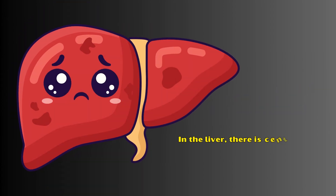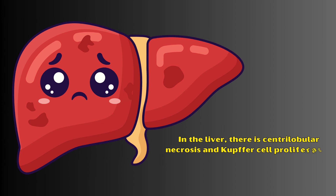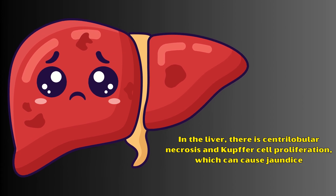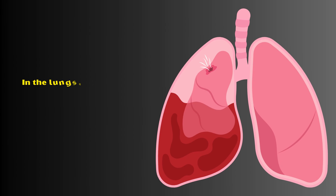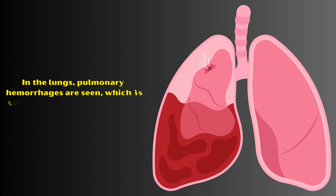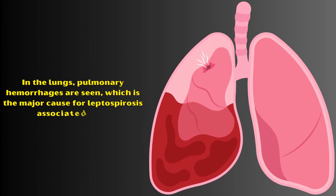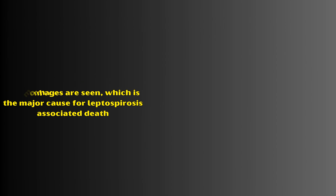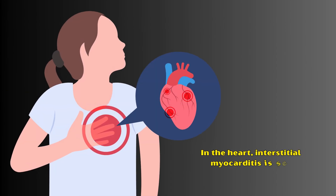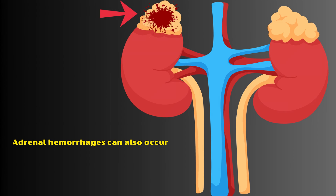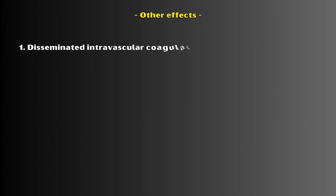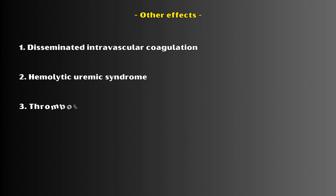In the liver, there is central lobular necrosis and Kupffer cell proliferation, which can cause jaundice. In the lungs, pulmonary hemorrhages are seen, which is the major cause for leptospirosis-associated death. In the heart, interstitial myocarditis is seen. Adrenal hemorrhages can also occur. Other effects include disseminated intravascular coagulation, hemolytic uremic syndrome, thrombotic thrombocytopenic purpura, and thrombocytopenia.